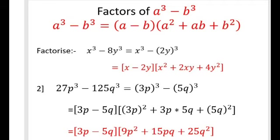Then a²: (3p)² = 9p². Plus ab: 3p × 5q = 15pq. Plus b²: (5q)² = 25q². So the factors of 27p³ - 125q³ are (3p - 5q)(9p² + 15pq + 25q²).